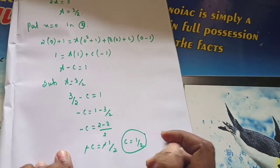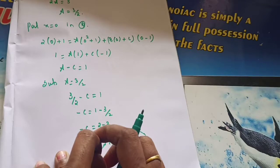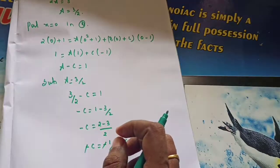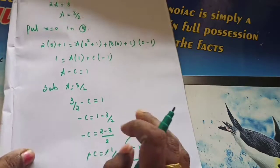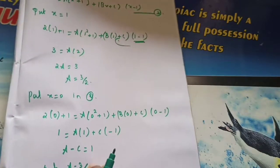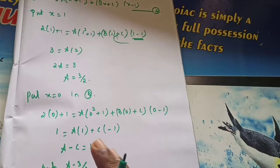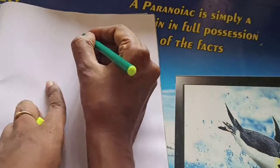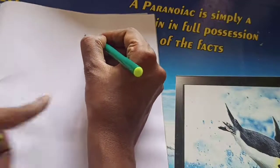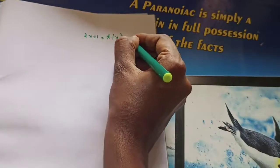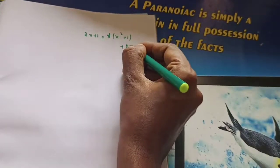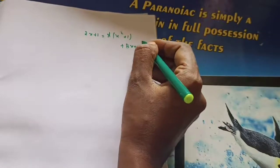Now we need only the b value. For that we equate the powers. Let us recall how we equate powers from last class. Writing equation number 2 again: 2x plus 1 equals A into x squared plus 1 plus bx plus c into x minus 1.